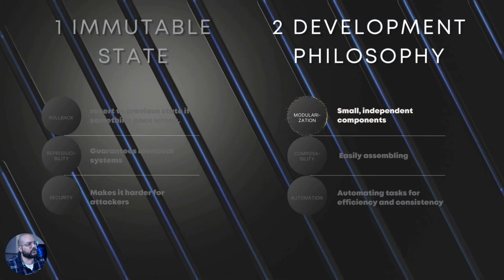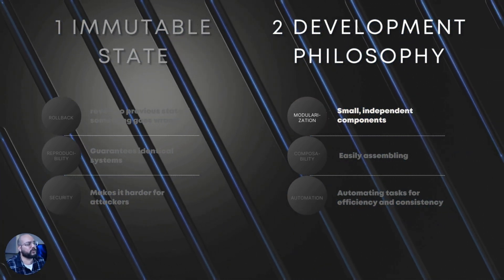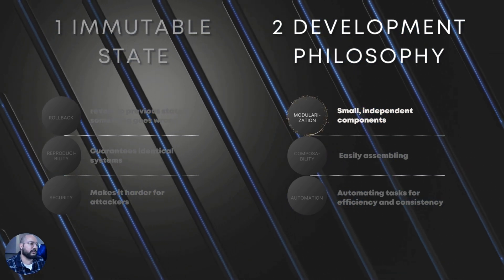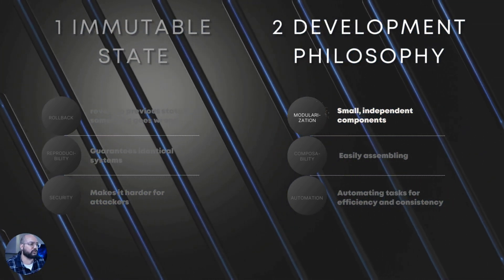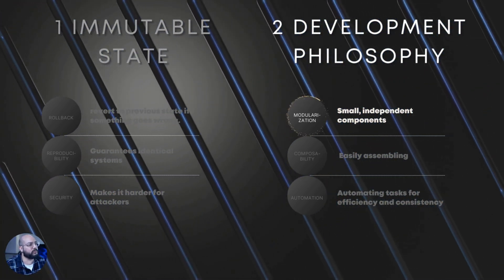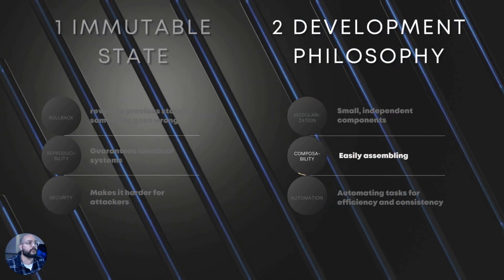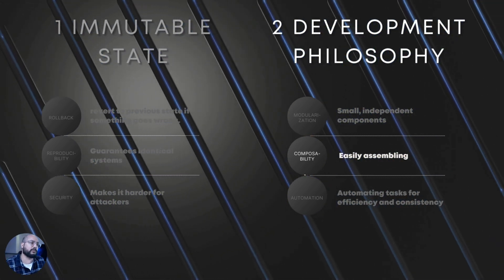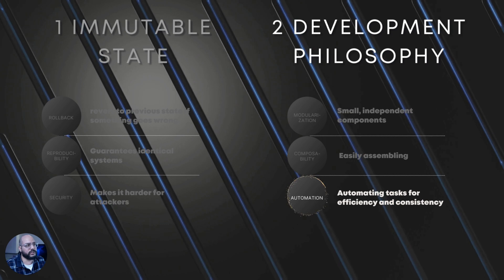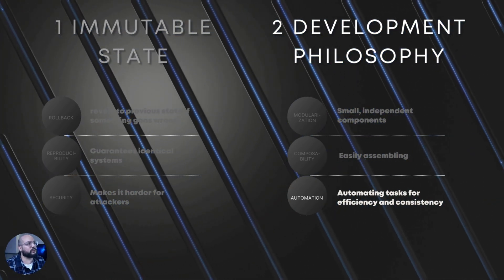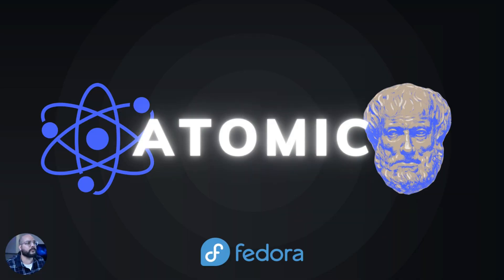The atomic name also reflects the project's development philosophy, which is the second part of what atomic means. The development philosophy emphasizes modernization, breaking down the system into small independent components — always a great idea when managing complex systems like an OS. Composability speaks about easily assembling systems by combining those components. And last but certainly not least, automation: automating system management tasks for efficiency and consistency. In summary, atomic emphasizes both the immutable system state achieved through RPM-OSTree and the modular, automated development philosophy of Fedora Atomic Desktops.